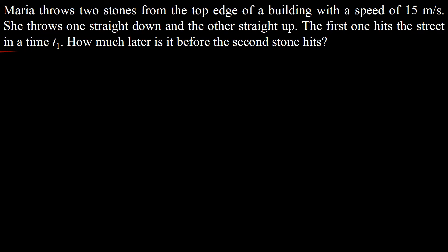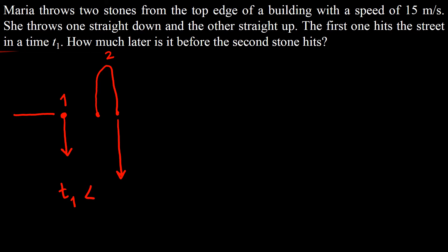In this problem, Maria throws two stones from the top of a building. The first stone is thrown directly down, whereas the second stone is thrown upward — it goes up, then comes back down. So obviously, the time it takes for the first stone to reach the street should be much less, T1 should be much less compared to the time it takes for the second stone to reach the street.